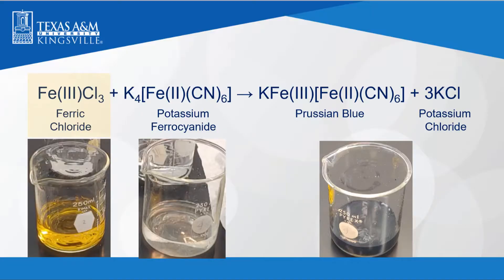Now this is the chemical reaction for the synthesis of Prussian blue. When ferric chloride is added to an excess of potassium ferrocyanide, Prussian blue and potassium chloride is produced.